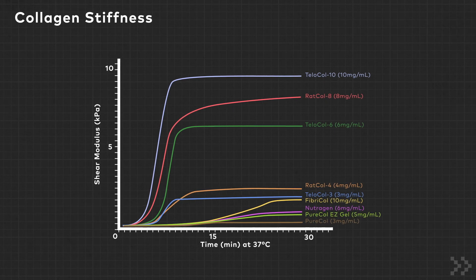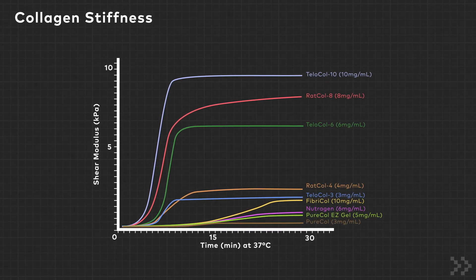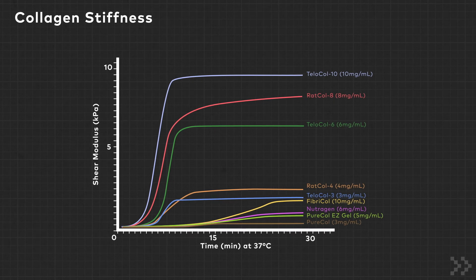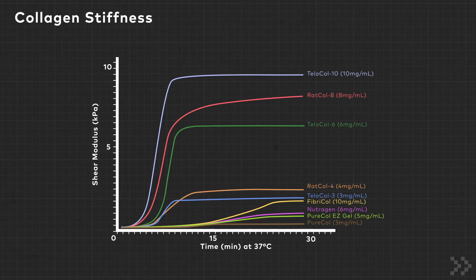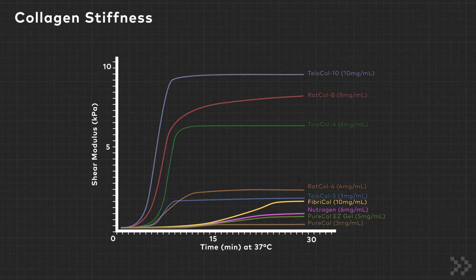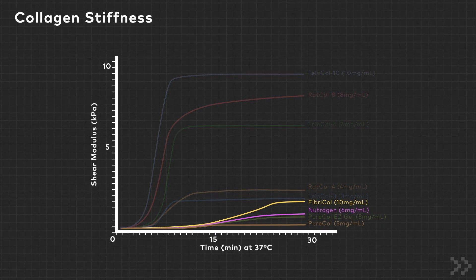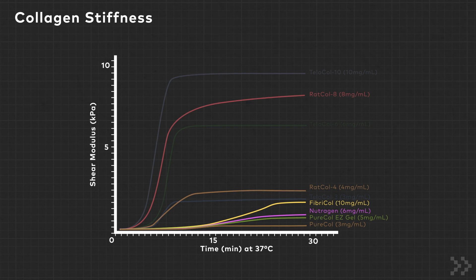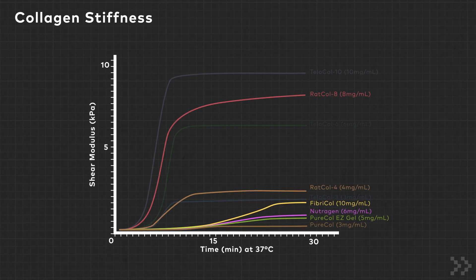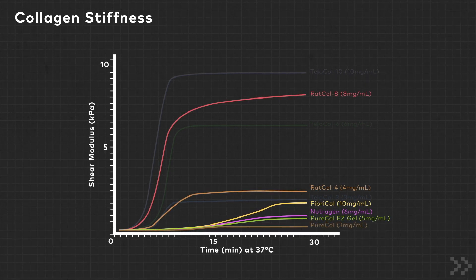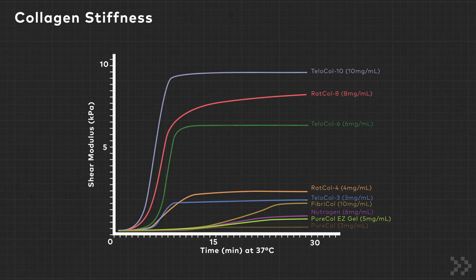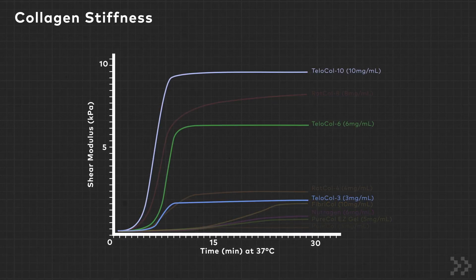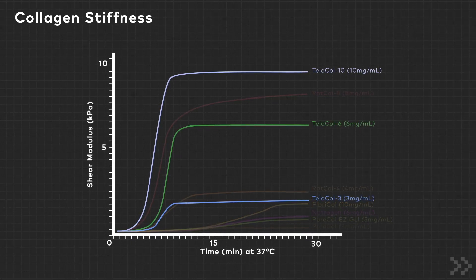The two main factors in determining 3D hydrogel stiffness are collagen concentration and whether telocollagen or atelocollagen is used. PureCal, Neutrogen, and FibroCal are all type 1A telocollagen with varying concentrations of 3, 6, and 10 mg per milliliter respectively. The same is true for the atelocollagen products: telocol 3, 6, and 10.